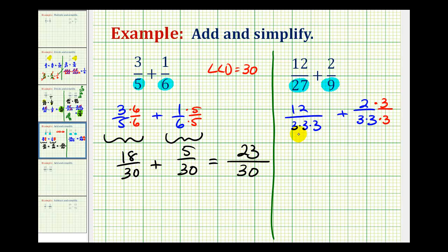So by using the prime factorization of the denominators, we can identify the LCD by determining which factors we must multiply by to make the denominators the same.